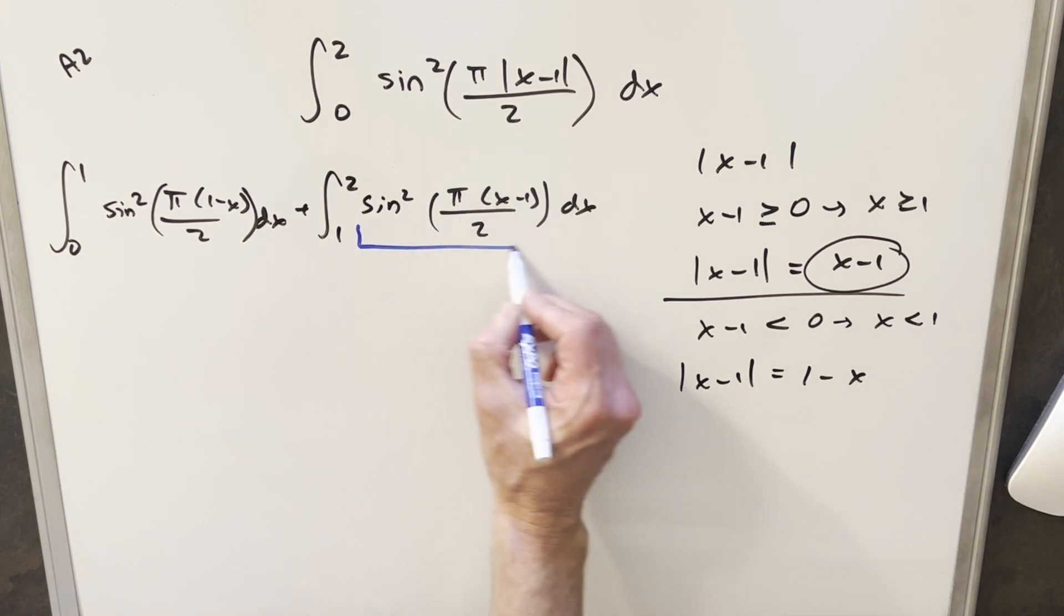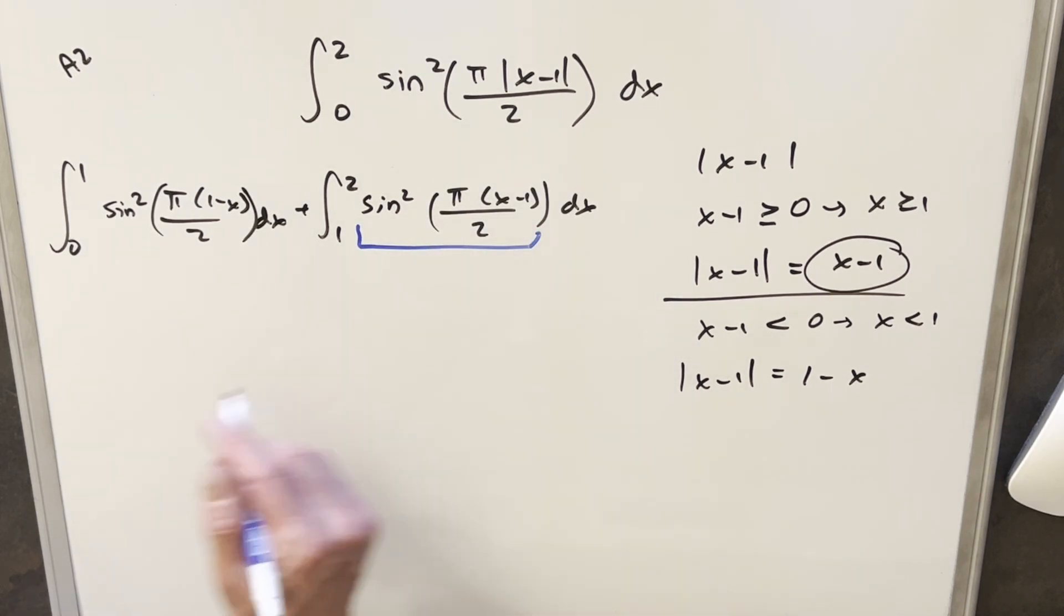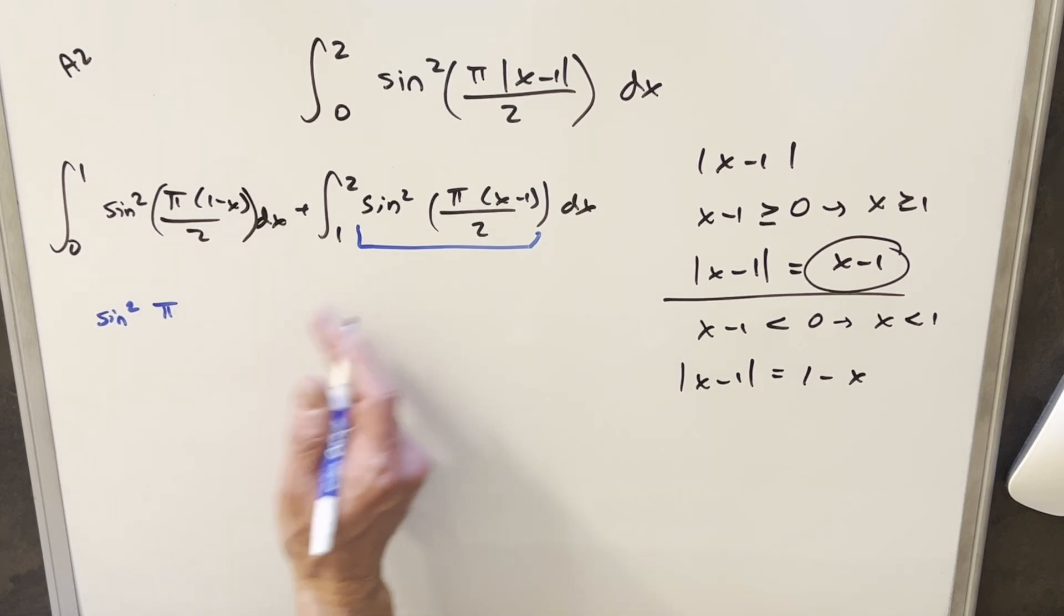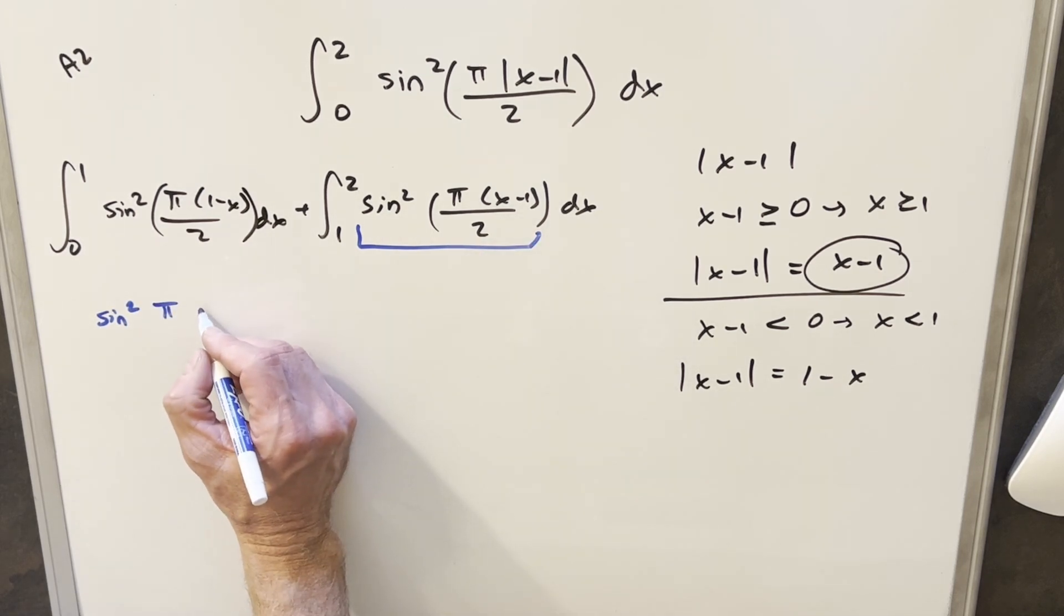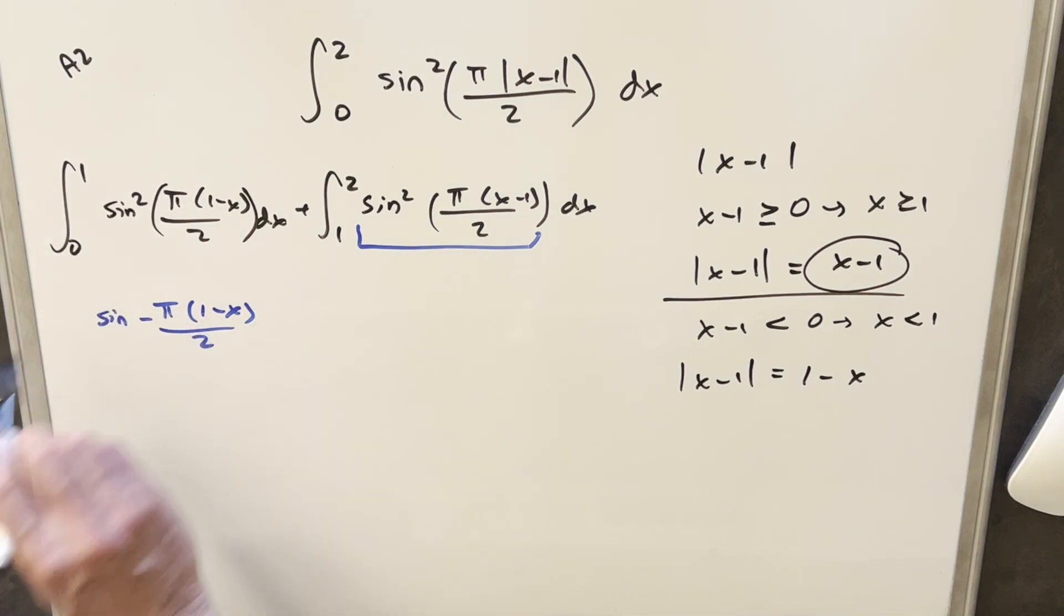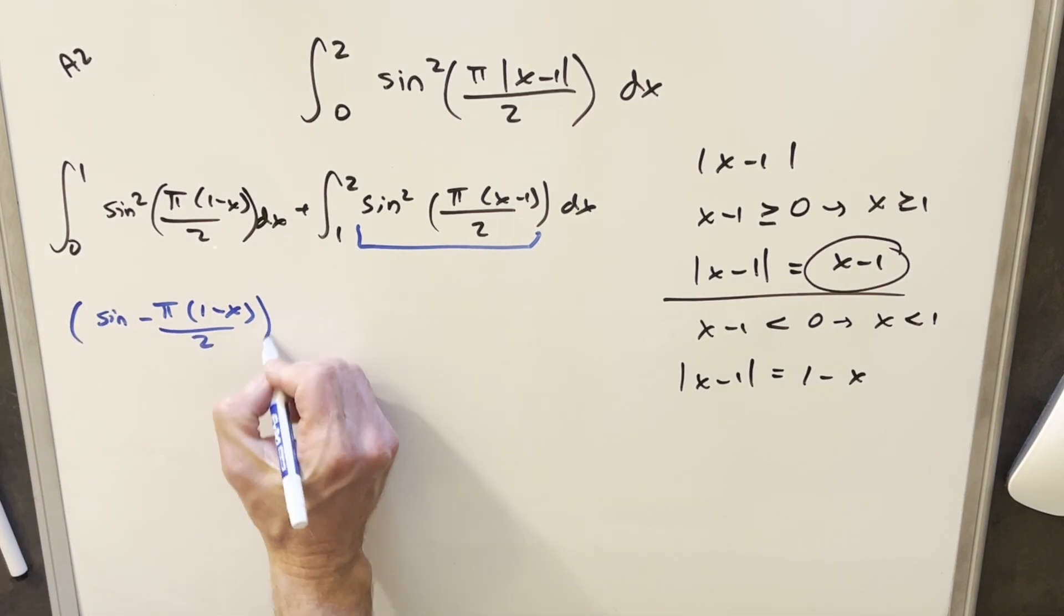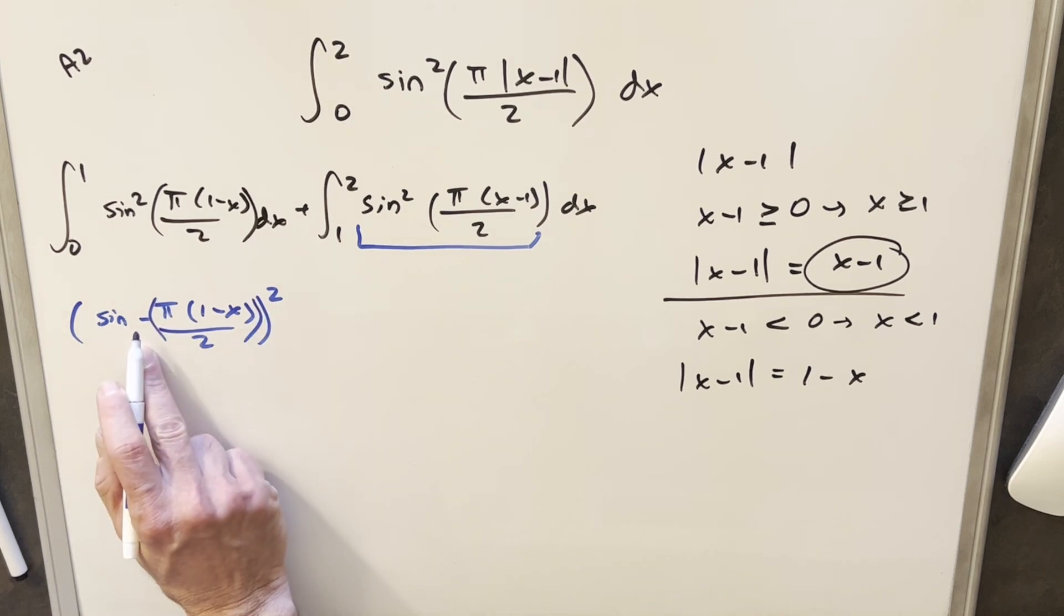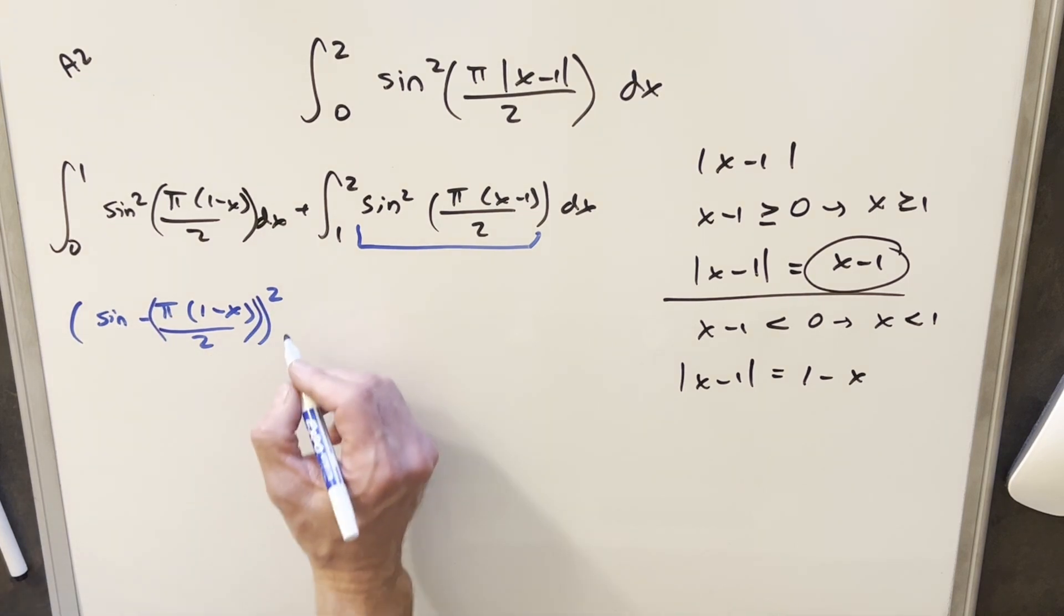But then from here, I want to just look at this term right here and just work on this. So if I rewrite this, I'm going to just make a subtle change. For x minus 1, I'm just going to reverse the sign on that, 1 minus x. But I don't want to change it, so I'm going to bring a minus up front. And then actually, with this sine squared, I'm going to put the square around the whole thing.